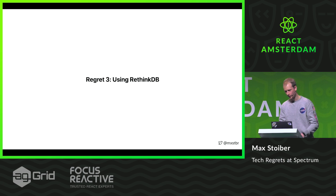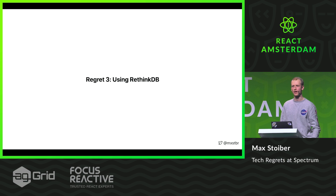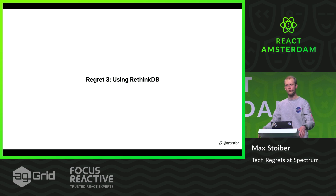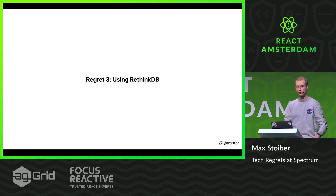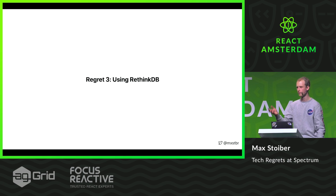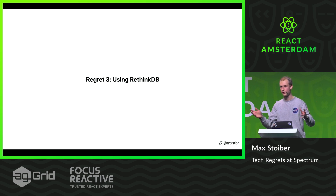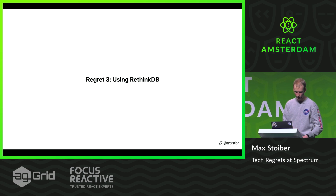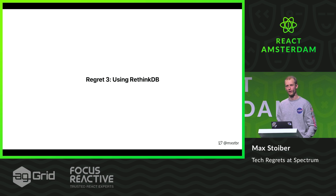It also turned out that the feature we chose RethinkDB for — Change Feeds — really doesn't scale at all. For every user loading the chat app, they need to get live updates: new messages, new posts, new users online. So for every user we started listening to three, four, five database queries for updates. But RethinkDB really can't handle any more than 50 or 100 change feeds, which is not enough. We had to work around this, and we managed, but it took way longer than it should have. At that point, we might as well have just built a separate PubSub layer and used an actual database rather than RethinkDB.